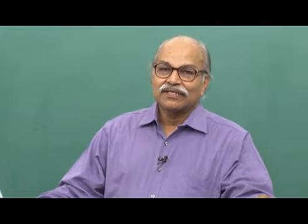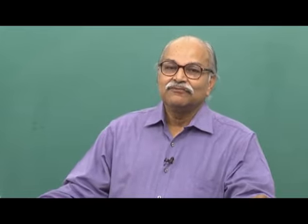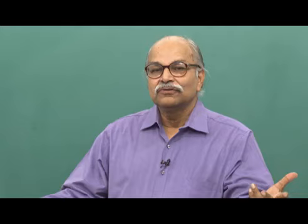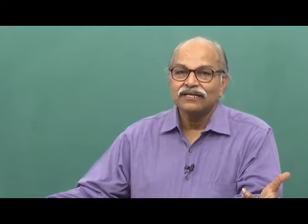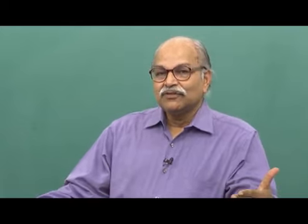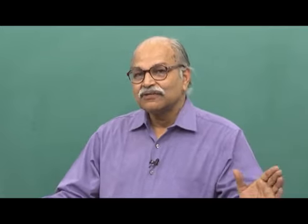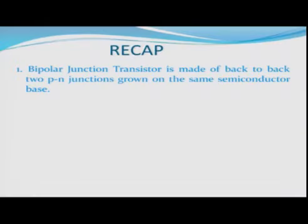We started on transistors and we saw the physics of it, how the charge carriers move across the junctions. Today we will be talking more on its applications. Let us first do some recap of what we did in the last lecture. A bipolar junction transistor — it is a junction transistor because you have two PN junctions, and bipolar because you have two of them, made of back-to-back two PN junctions grown on the same semiconductor base.